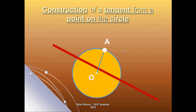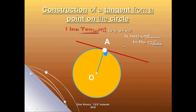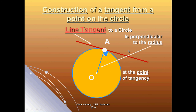We draw a line outside the circle which is perpendicular to the radius at point A. We call this red line the tangent line to the circle at point A, where A is the point of tangency. A line tangent to a circle is perpendicular to the radius at the point of tangency, which is A in this case.